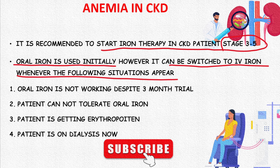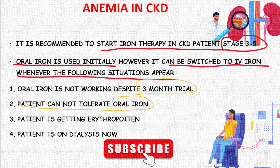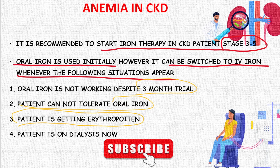We switch to IV iron in the following situations: if oral iron is not working despite a three-month trial; if the patient cannot tolerate oral iron due to anorexia, nausea, or vomiting; or if the patient is receiving erythropoietin, which should always be given with IV iron.